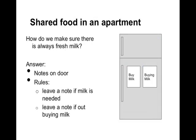For our next example, consider shared food in an apartment. Suppose you want to always have fresh milk. One way to handle this is a note on the door saying milk is needed, and another note saying you're buying milk. The first note tells your roommate there's no milk; the second prevents them from also buying milk, leaving you with too much. Again, we have shared resources and rules on how to share them.